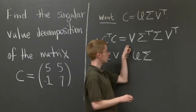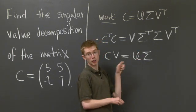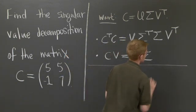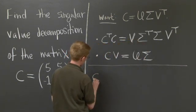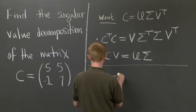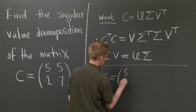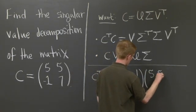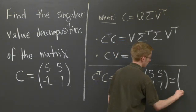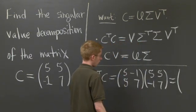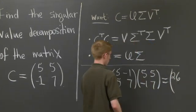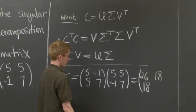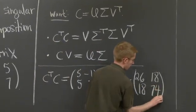So these are the two equations we need to use to find V, Sigma, and U. Let's start with the first one. So let's compute C transpose C. If you compute, we'll get 26, 18, 18, and 74.